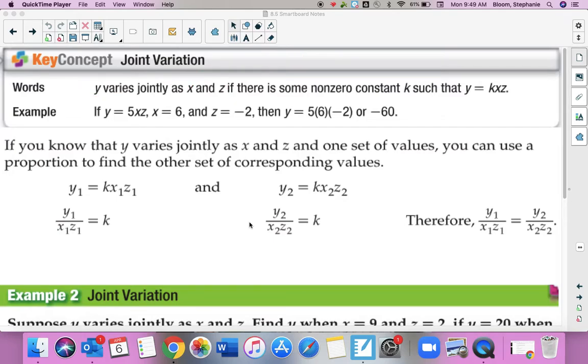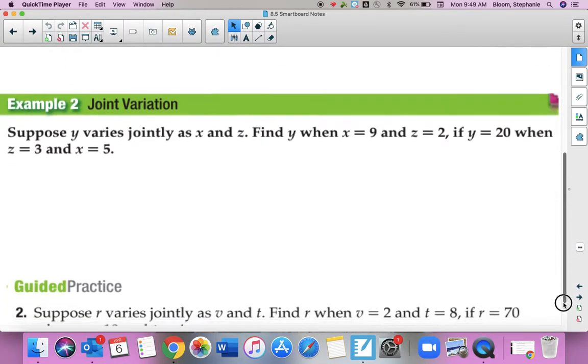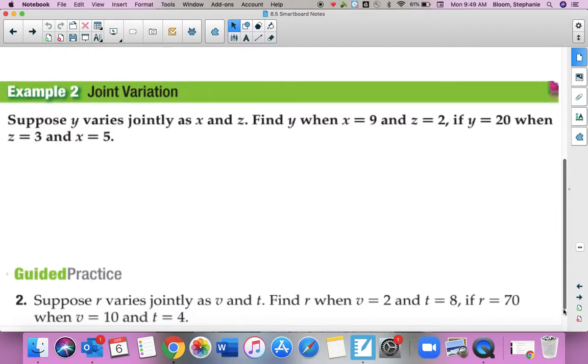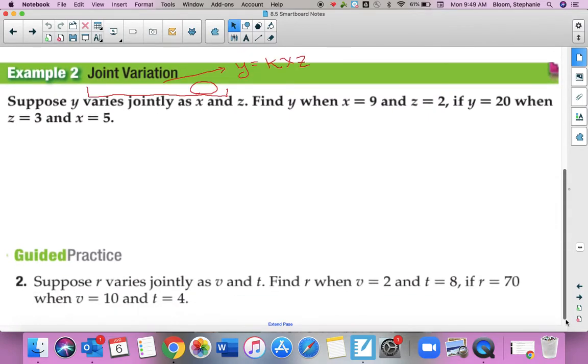So let's look at an example of this. So here's the first one. It says, suppose Y varies jointly as X and Z. And so first thing I'm going to do is write what that equation would look like. X, Z. And we want to find Y when X is equal to 9 and Z is equal to 2.